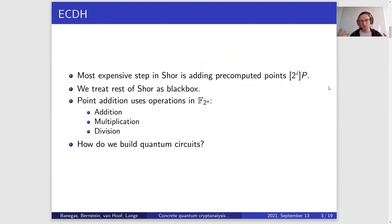Shor's algorithm — we are going to be treating most of the quantum parts of Shor's algorithm as a black box. We will be focusing on adding pre-computed points, which is the non-quantum step of Shor's that is repeated a lot and is really the most expensive one. We are adding multiples of points on the binary elliptic curve, and to do that we need addition, multiplication, as well as division in binary finite fields. Today we will be talking about quantum circuits for these actions, then circuits for the full point addition, and finally putting it together for the full result.